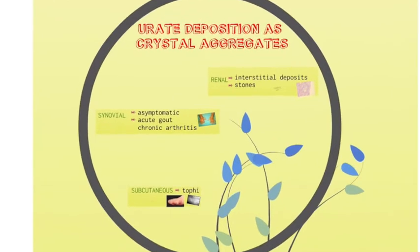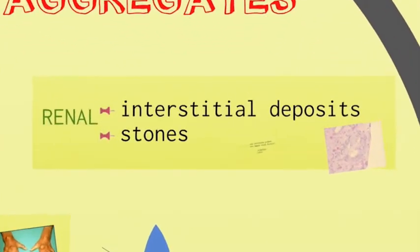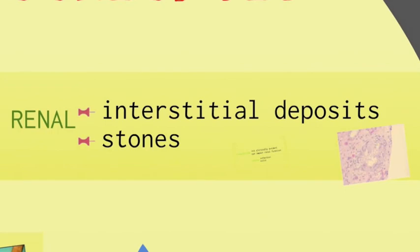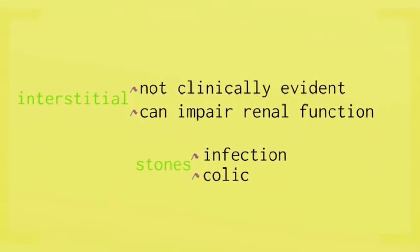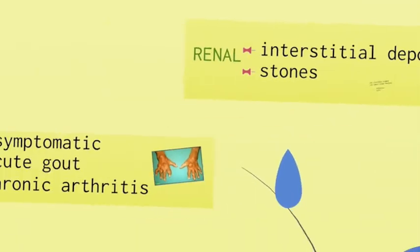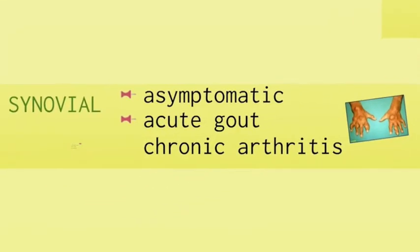Uric acid deposition in the kidneys causes interstitial deposits and stones. These interstitial deposits are not really clinically evident but can impair renal function to a limited extent, and the stones of course can be a nidus for infection or can cause renal colic.